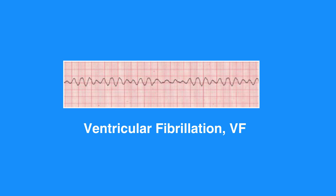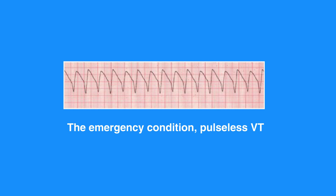VT is a condition in which the ventricles contract more than 100 times per minute. The emergency condition of pulseless VT occurs when ventricular contraction is so rapid that there is no time for the heart to refill, resulting in an undetectable pulse. In both cases, the individual is not receiving adequate blood flow to the tissues.